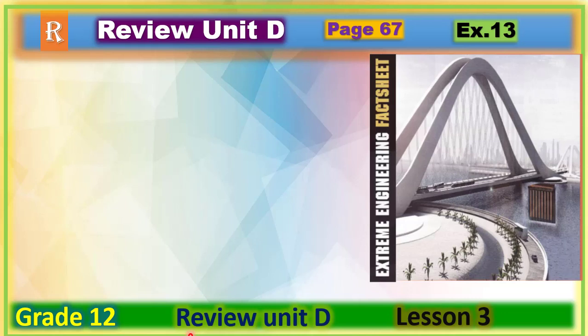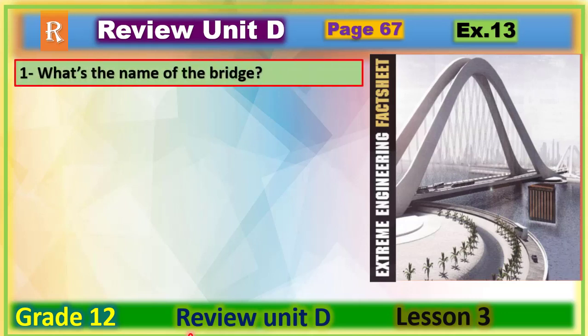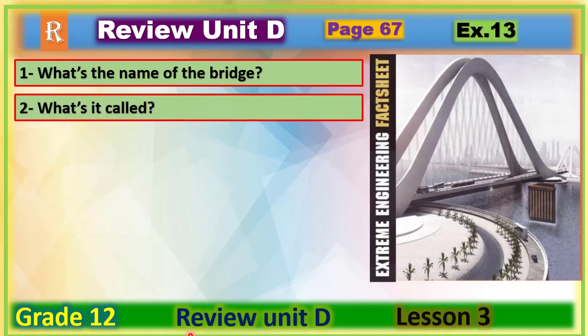Now let's discuss your questions. The first question you might write: what is the name of the bridge? Great. What about the second question? Can you read your question? Great, what is it called? Both questions are the same. I'm asking about the name. I can say what is the name of the bridge, or I can say what is it called. Good.